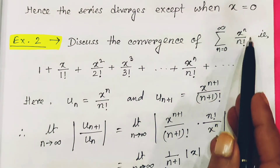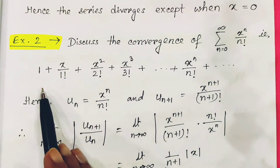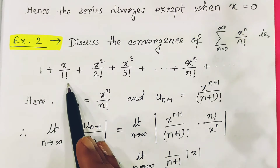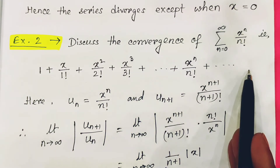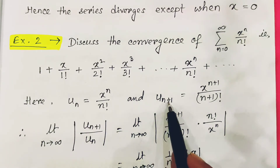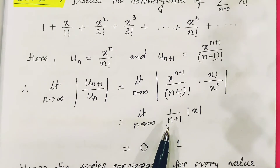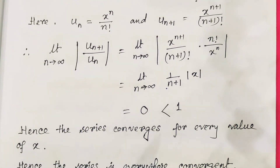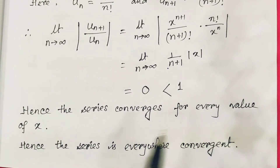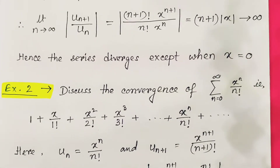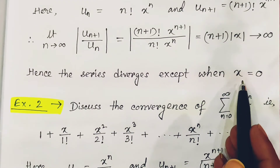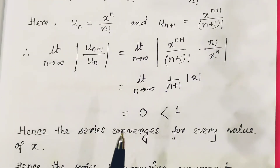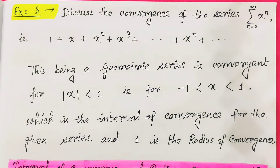The second example is summation of x^n divided by n!, which expands as 1 + x/1! + x²/2! + x³/3! and so on. Here u_n = x^n / n! and u_{n+1} = x^{n+1} / (n+1)!. Taking the ratio and limit as n tends to infinity, we get 0, which is less than 1. Hence, the series converges for every value of x — this series is everywhere convergent.